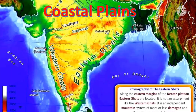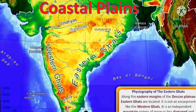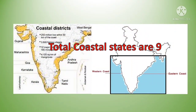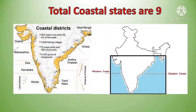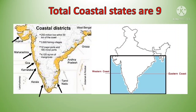We have two parts of coastal plains: the eastern coastal plain and the western coastal plain. The total number of coastal states is 9: Gujarat, Maharashtra, Goa, Karnataka, Kerala, Tamil Nadu, Andhra Pradesh, Odisha, and West Bengal.